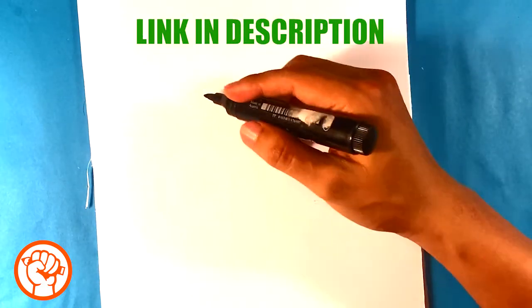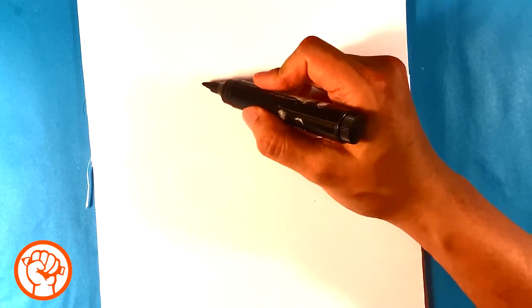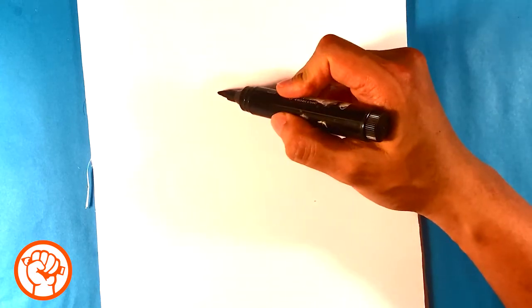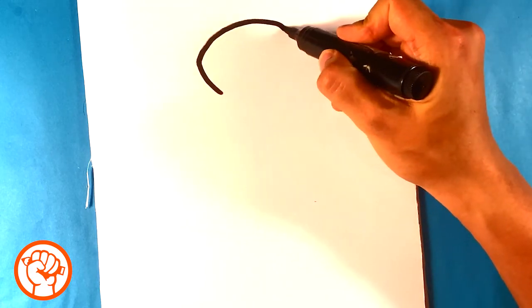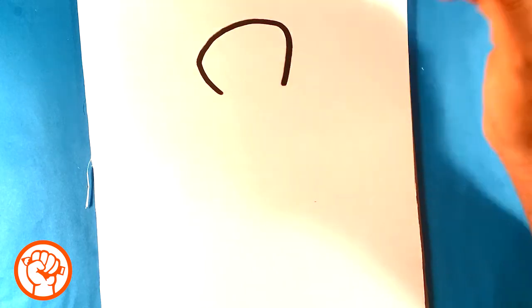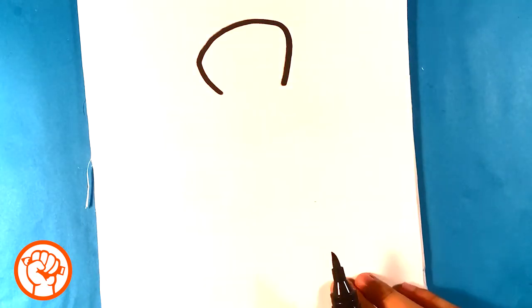So first thing I'm going to do is I am going to draw the head of the meerkat. Meerkat's like a cute little character. And I actually went to the zoo today. That's kind of why I'm going to draw this. So very simple shape to the head.